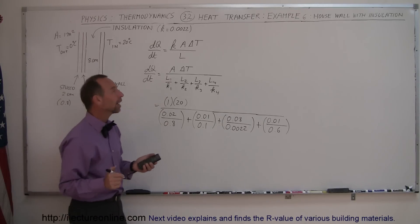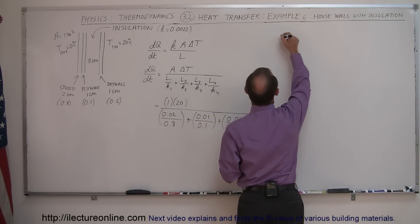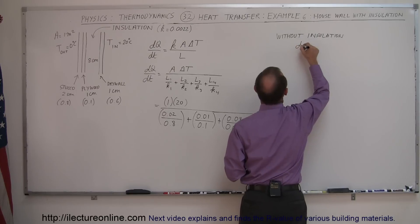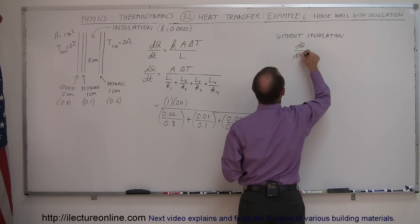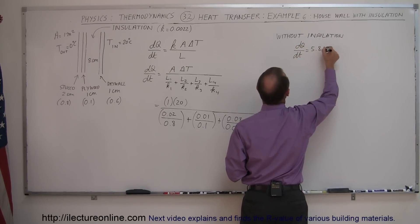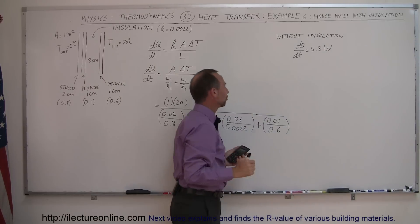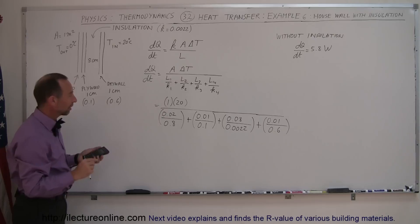Remember, without the insulation, let's write it down so we remember, so without insulation, the DQDT from the previous problem, if I remember right, was 5.8 watts, 5.8 joules per second. Let's see what we get in this case.